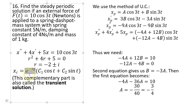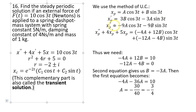The complementary solution is called the transient solution because the exponential decay makes it approach zero for large t. The general solution is x = xc + xp, but xc vanishes, leaving mostly xp. For the particular solution, we guess xp = A·cos(3t) + B·sin(3t). Verify there is no duplication with the complementary solution, then differentiate to find xp' and xp''.